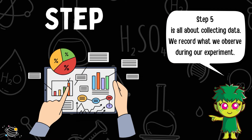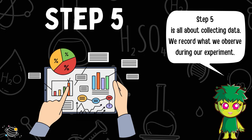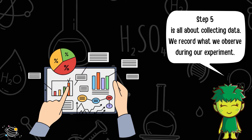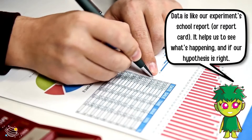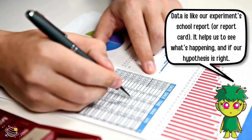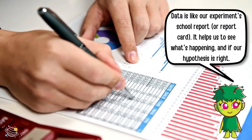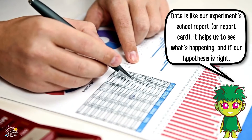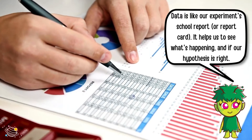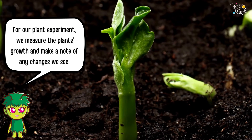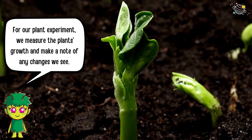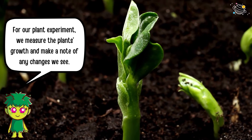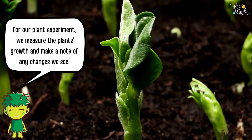Step five is all about collecting data. We record what we observe during our experiment. Data is like our experiment's report card — it helps us to see what's happening and if our hypothesis is right. For our plant experiment, we measure the plant's growth and make a note of any changes we see.